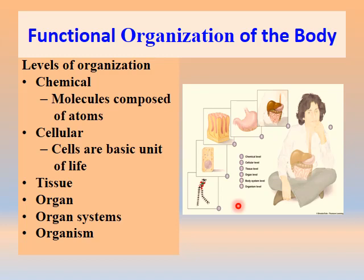Now let us look at the functional organization of the human body. Basically, the protoplasm is made up of various complex molecules, such as protein molecules, carbohydrates, lipids, nucleic acids, and further the molecules are made up of atoms. So the first level of organization of living beings is the molecular level.